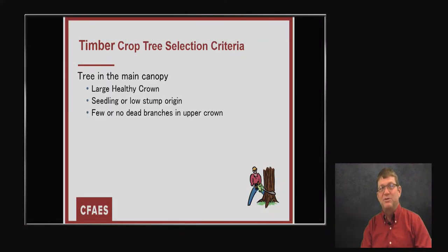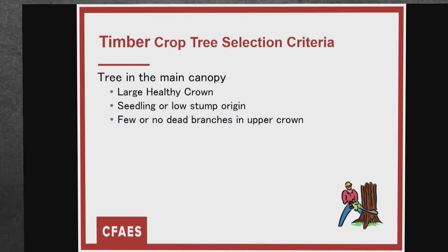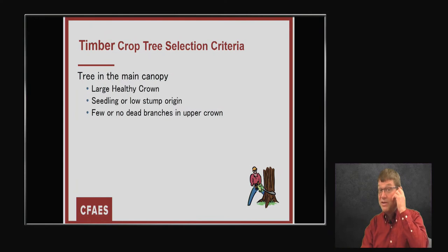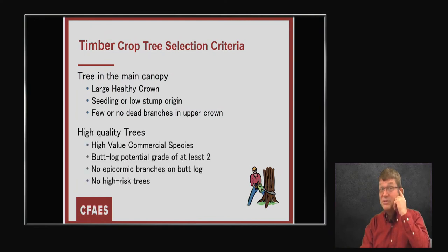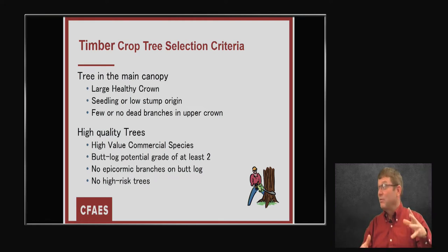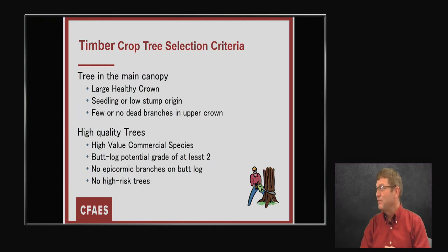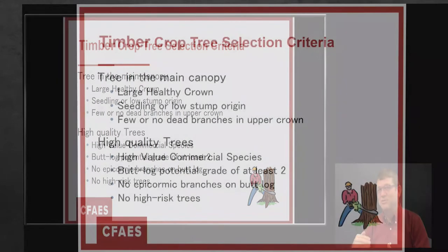If we're managing for timber, we want something with a decent healthy crown — no dead branches up there. A lot of trees start from a seedling, but after a harvest many start from a sprout. As long as that sprout comes off the stump near the ground, it's a good tree to manage. If it's on a high stump, we could have problems with decay later. We want the right species, high-quality trees without a lot of defects on that bottom log. The butt log — from the ground up — is worth about 80% of the value of the tree.